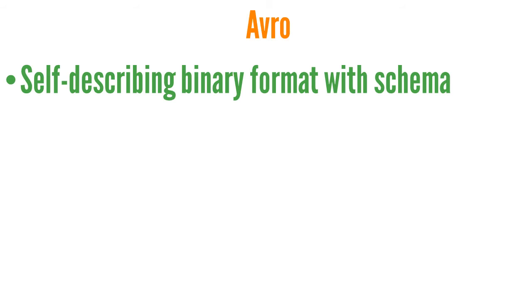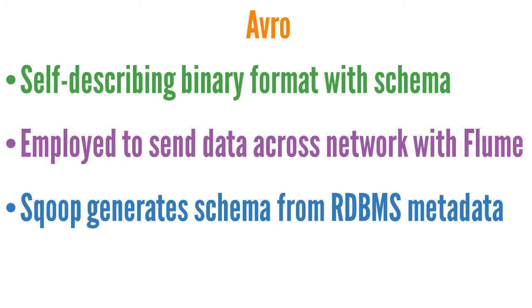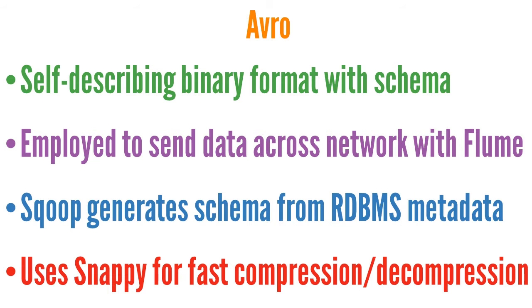Avro uses a self-describing binary format. When data is serialized using Avro, a schema is stored along with the data. Therefore, an Avro file can be read using many programming languages. Avro is commonly used to send data across networks, since it's known as an efficient serialization mechanism for transforming data into a compact binary format. The Avro file format is the standard method used to send data across a network with Flume. Sqoop automatically generates an Avro schema from the metadata it retrieves from a relational database server. And Avro can use Snappy for fast compression and decompression.